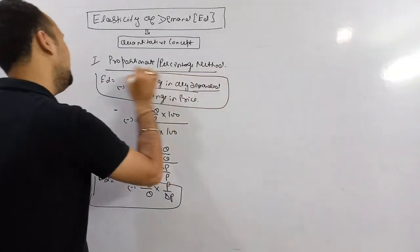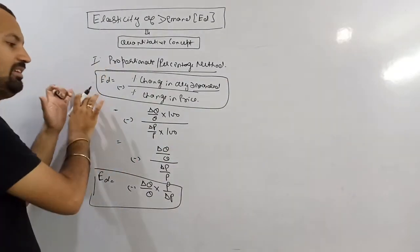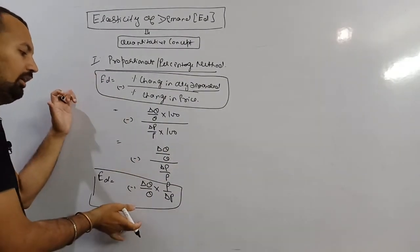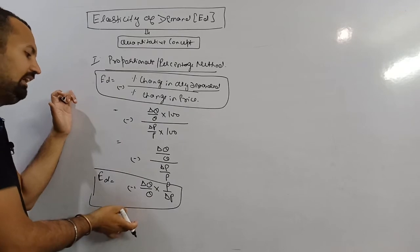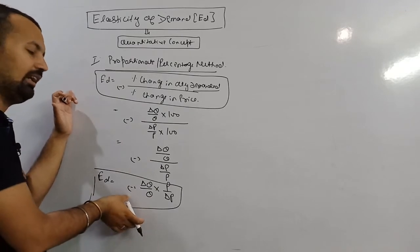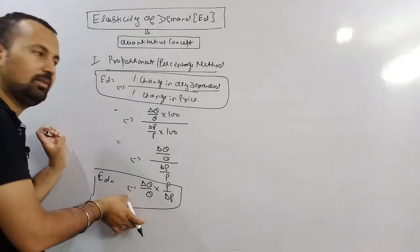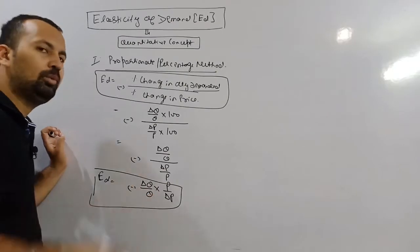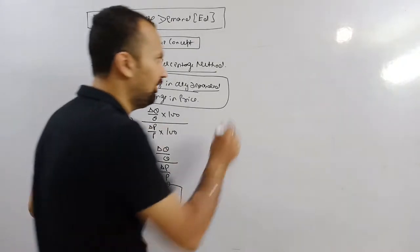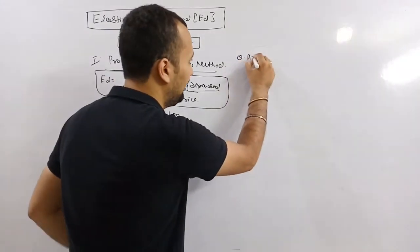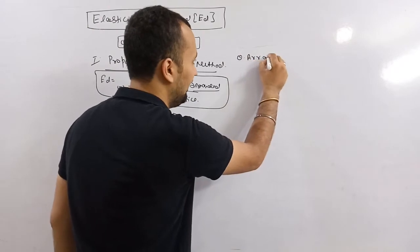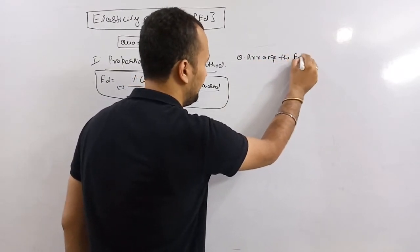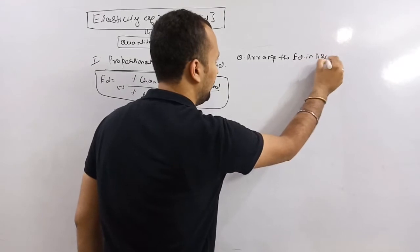So the first formula is: Ed equals percentage change in quantity divided by percentage change in price. This can also be written as Ed equals minus delta Q upon Q into P upon delta P. The first question is to arrange the elasticity of demand values in ascending order.